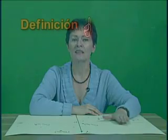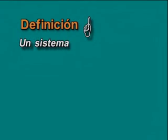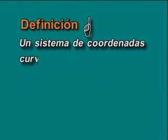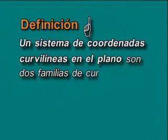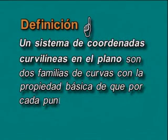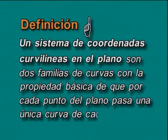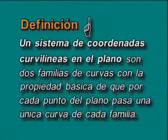Ahora bien, ¿qué es un sistema de coordenadas en el plano, o sea en R²? Un sistema de coordenadas curvilíneas en el plano son dos familias de curvas con la propiedad básica de que por cada punto del plano pasa una única curva de cada familia.